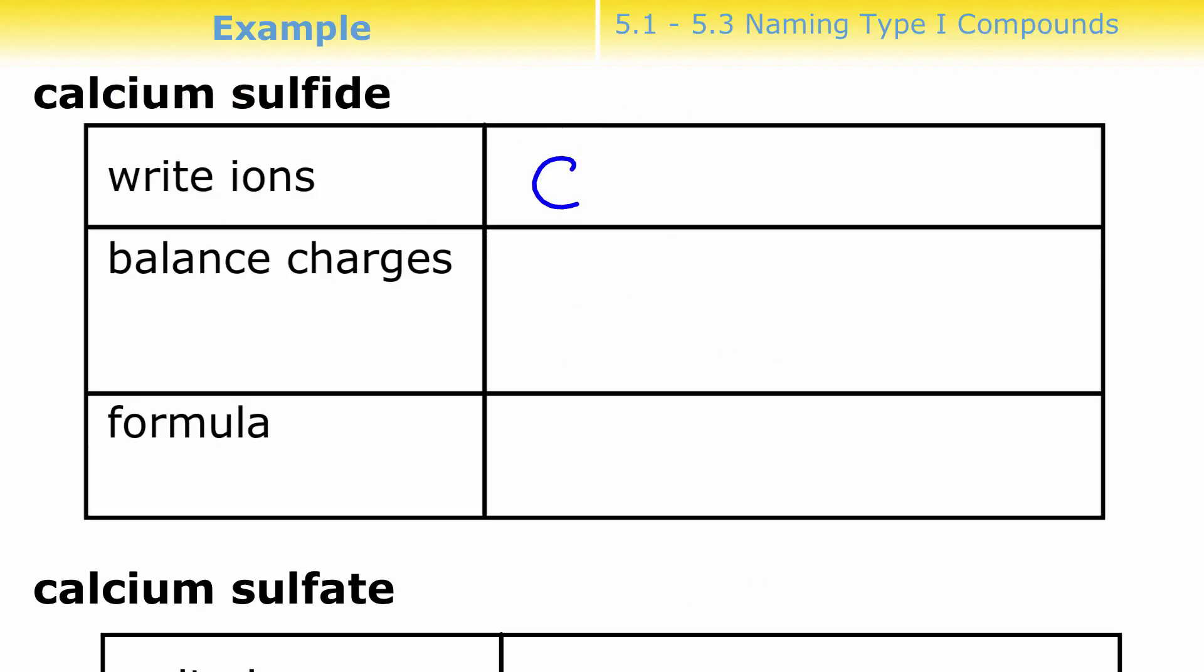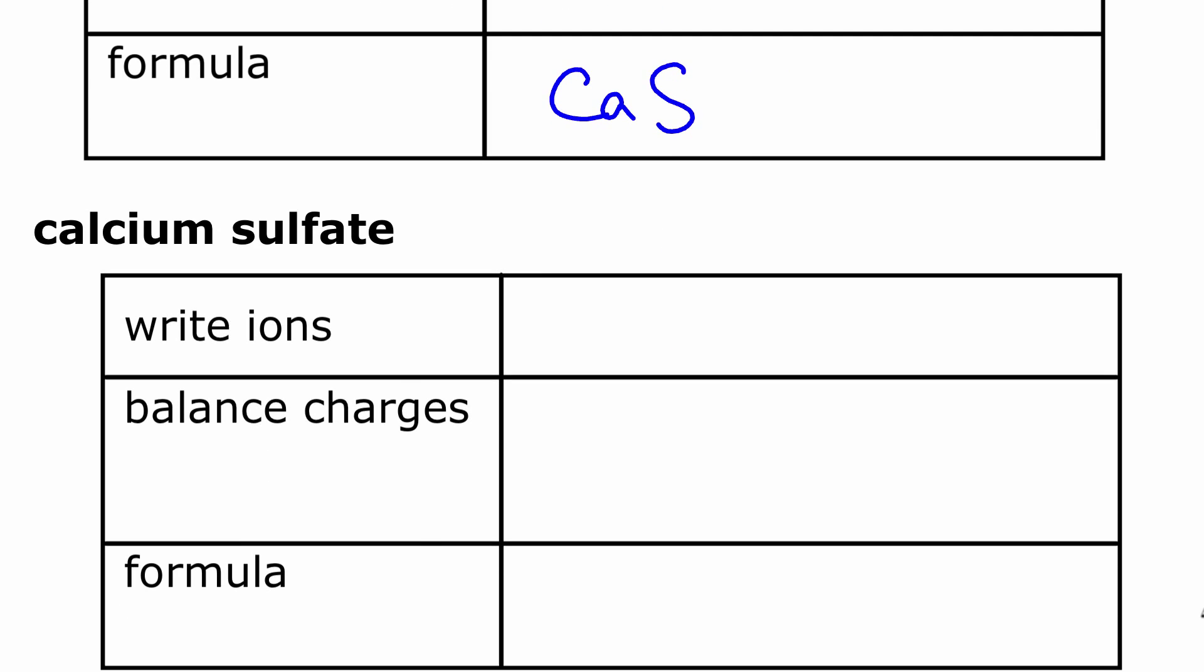A couple more. Calcium sulfide. Calcium is a 2 plus. Sulfur, look off your chart, it's a 2 minus. Hey, they're even-steven already. So I just need 1 calcium for every sulfide ion. Done. Here's another one of those sulfate things. Sulfide versus sulfate. Let's try sulfate. Sulfate must be on the polyatomic ions. If you look it up, I believe it's an SO4 2 minus. Again, they're even-steven. Perfect. So I just need 1 of each. So it would just be CaSO4. That would be my formula for calcium sulfate.